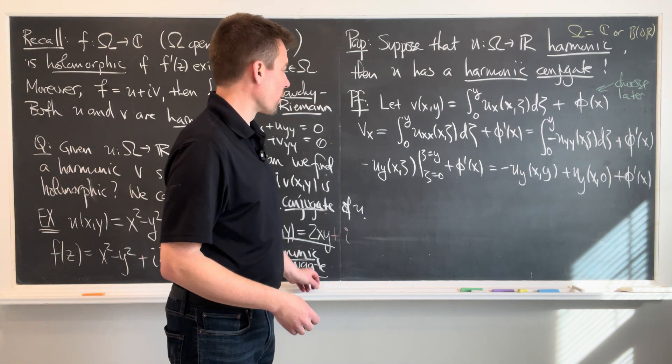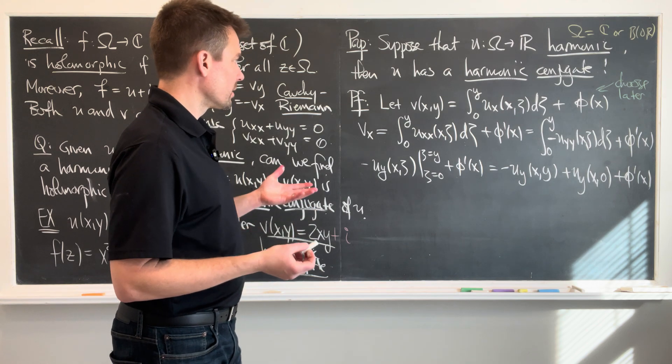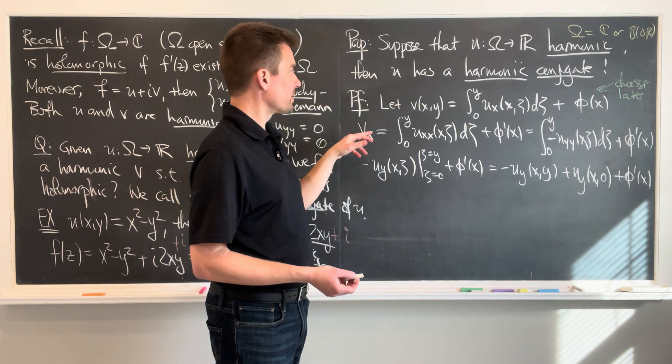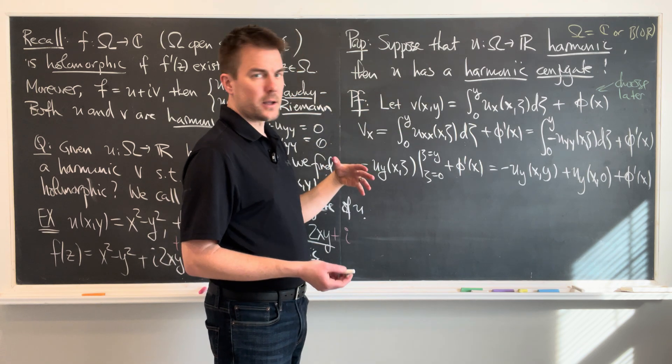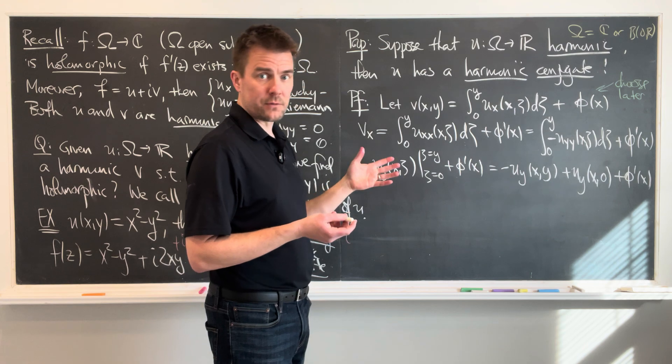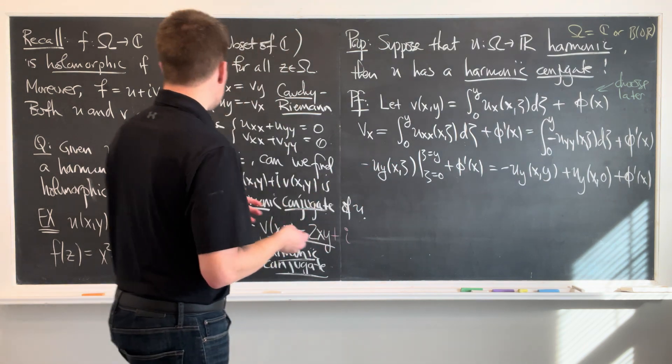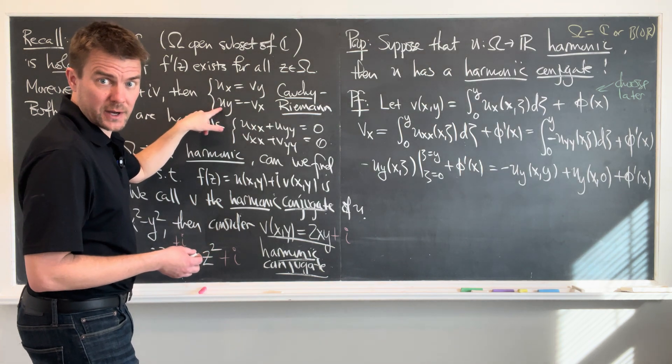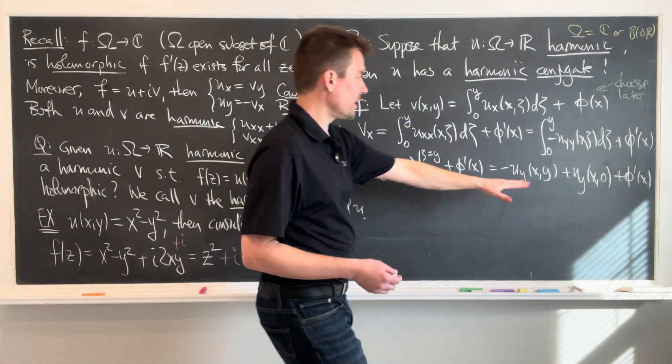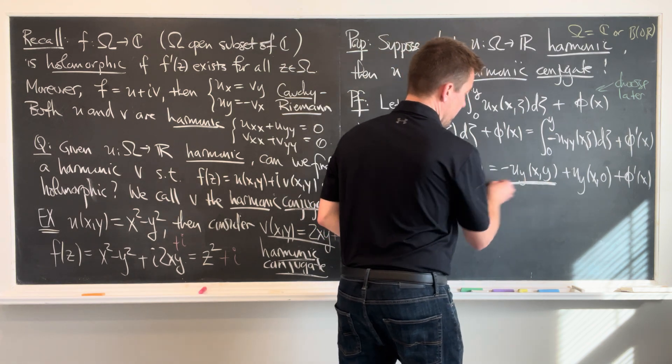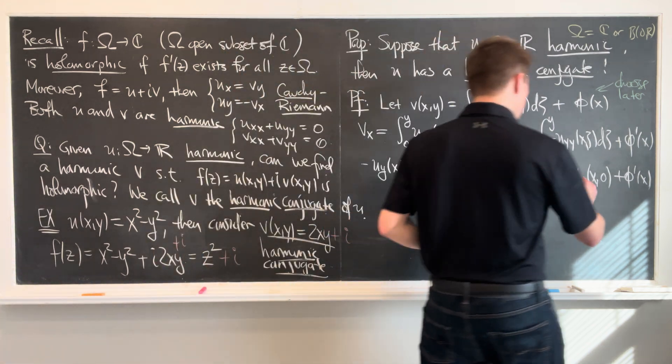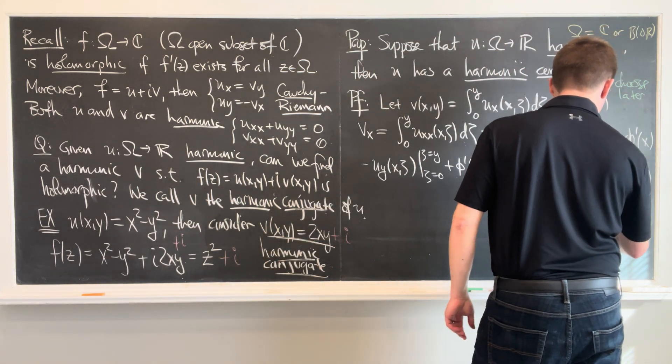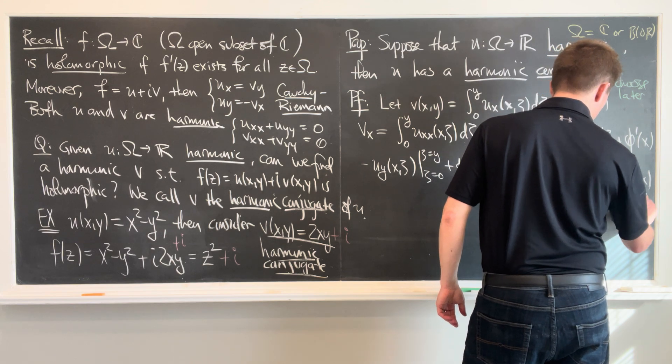Now, what do we want in order for this function v? What would I want if u plus this function v to be analytic? I would need that vx is negative uy. Because ux is vy and then vx has to be negative uy by Cauchy-Riemann. So I want this to be the only term we see. That's all I want. In other words, in particular, these terms over here, I want them to be zero. Those terms over here must be zero.